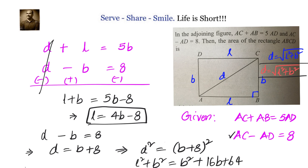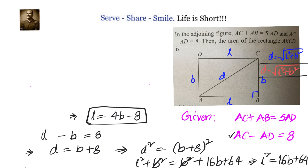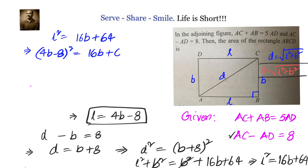Expanding the right side gives B squared plus 16B plus 64. Cancelling B squared from both sides, we have L squared equals 16B plus 64. Now substituting L equals 4B minus 8, we get (4B minus 8) squared equals 16B plus 64. Expanding the left side gives 16B squared minus 64B plus 64 equals 16B plus 64.